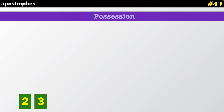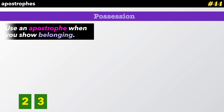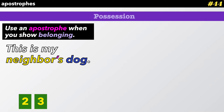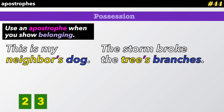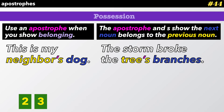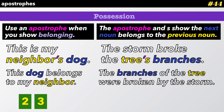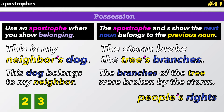The next rule is for possession. Use an apostrophe when you show belonging. This is my neighbor's dog. The storm broke the tree's branches. The apostrophe and S show the next noun belongs to the previous noun. Whose dog? My neighbor's dog. Which branches? The tree's branches. This dog belongs to my neighbor. The branches of the tree were broken by the storm — kind of an awkward sentence. It's much better with an apostrophe.